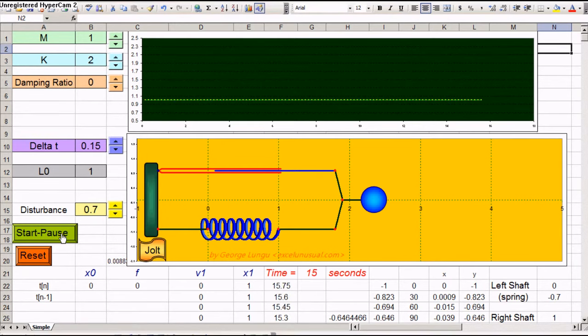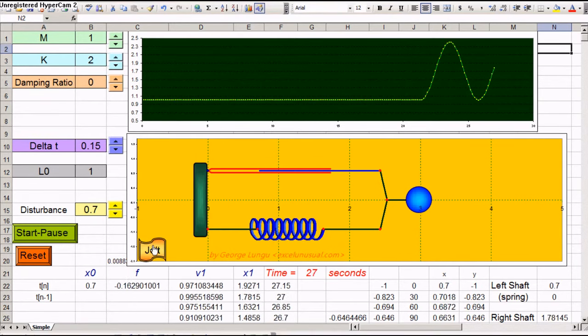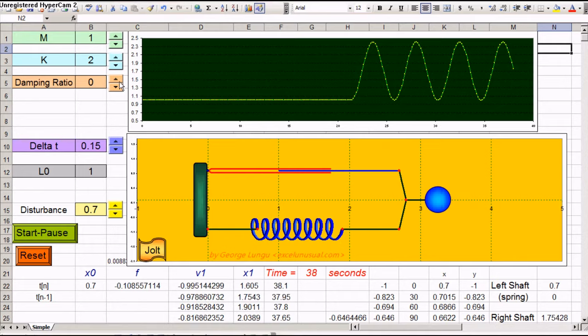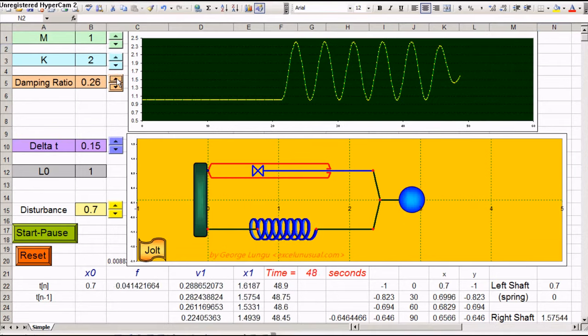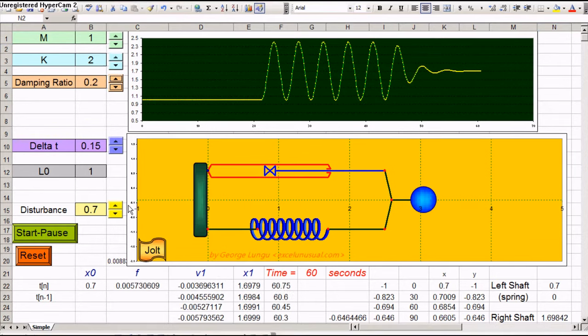Let's start the model, hit start pause, then jolt. Now damping is zero, so let's increase the damping to 0.2.